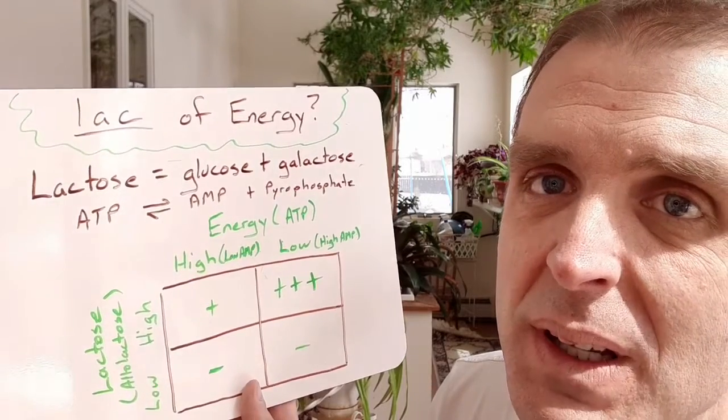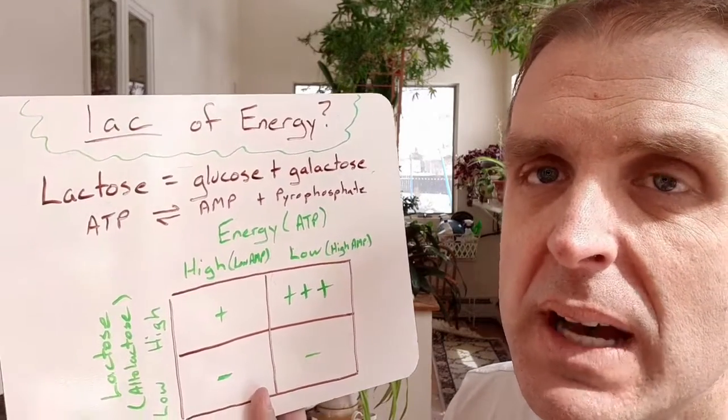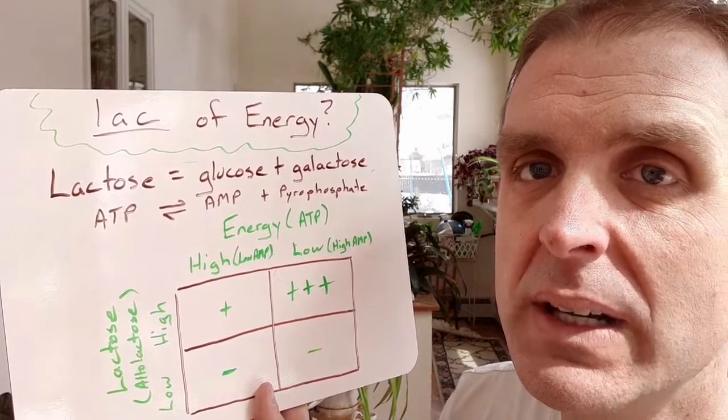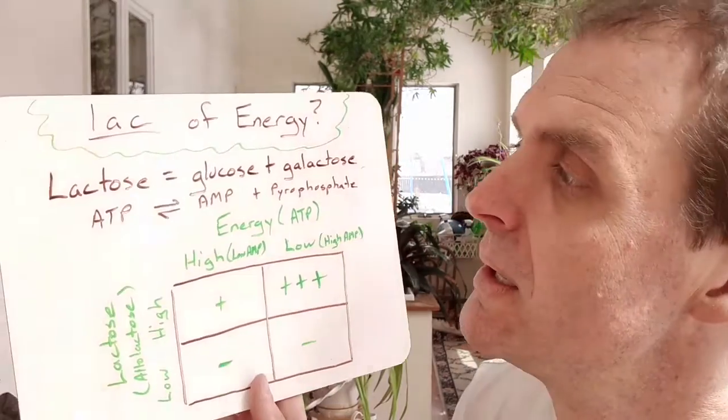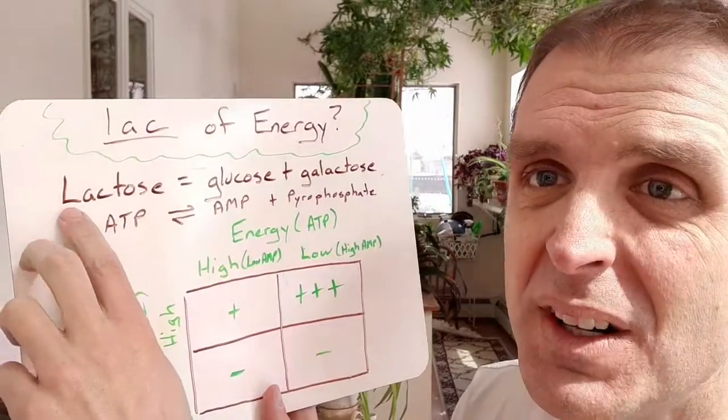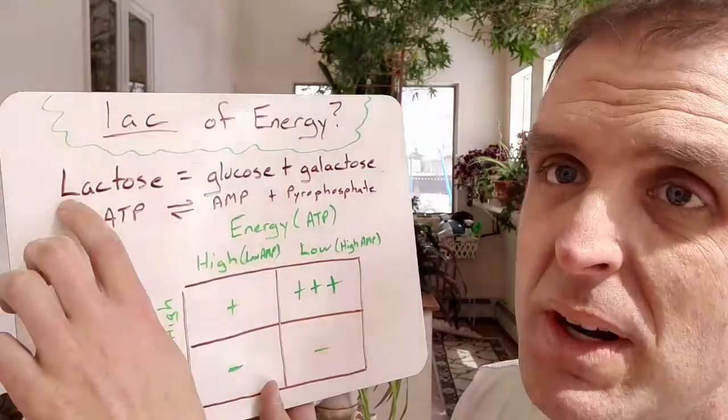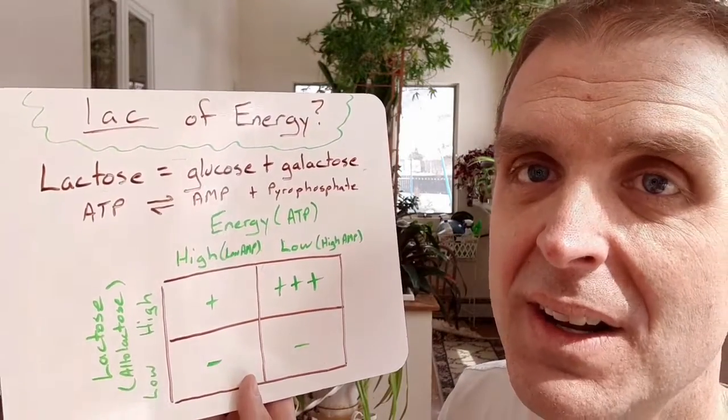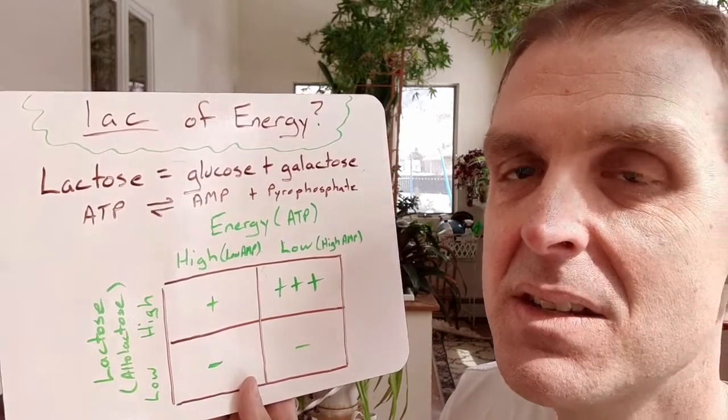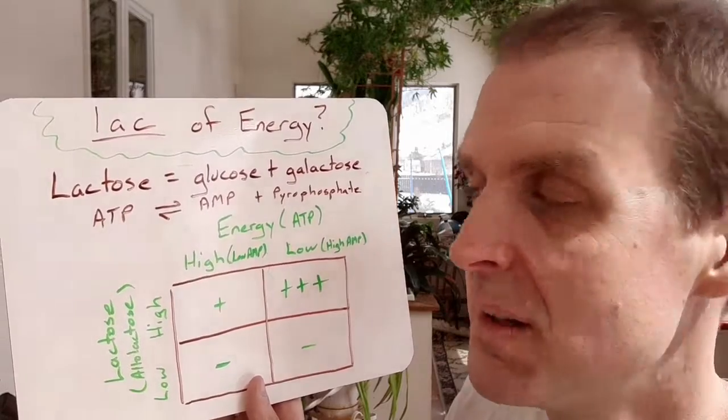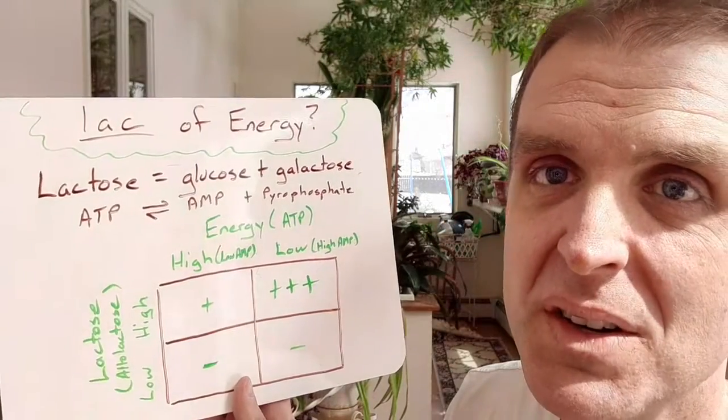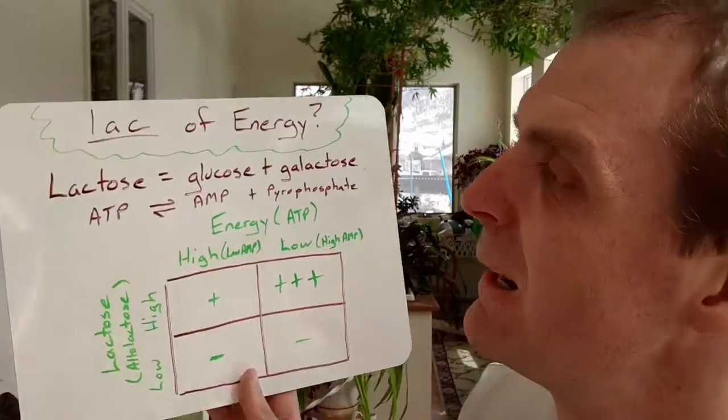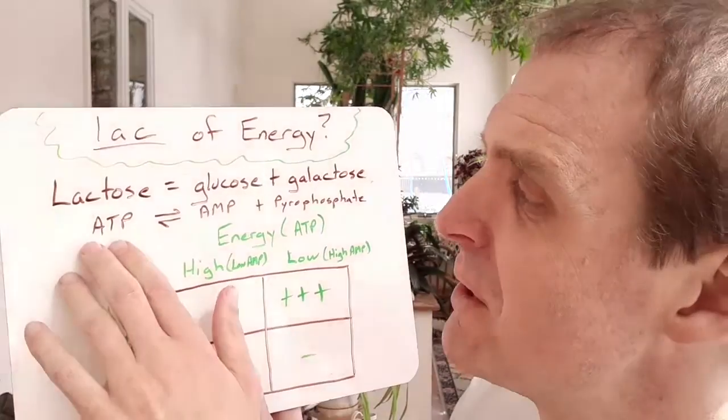And glucose should ring a bell for you because that would be the molecule we broke down in cellular respiration to get so many ATP for the cell. So if you're low on energy, let's break down lactose and get some glucose, and then we know all of the glycolysis and the rest of the steps to cellular respiration.